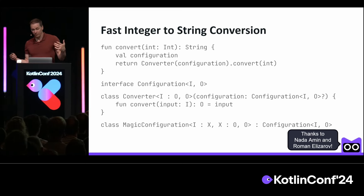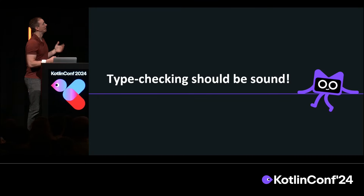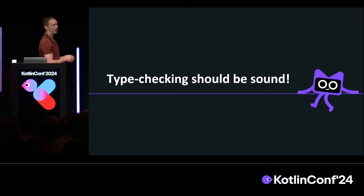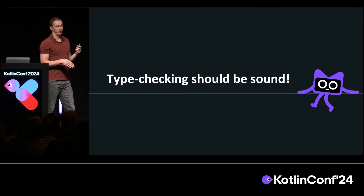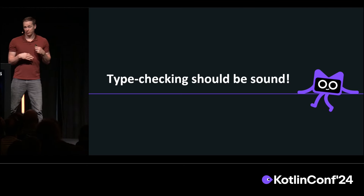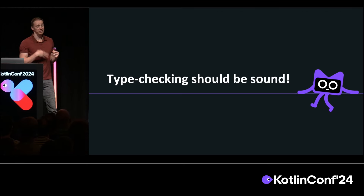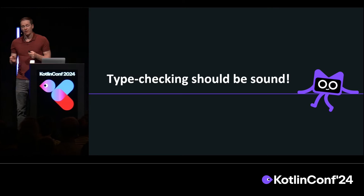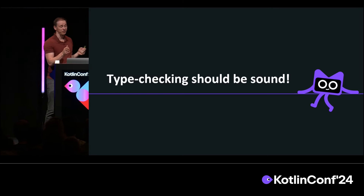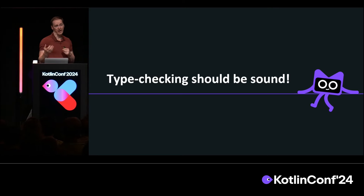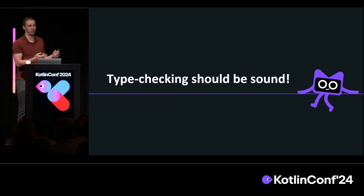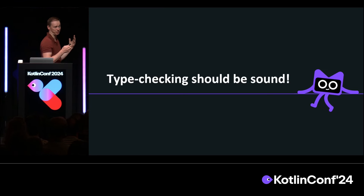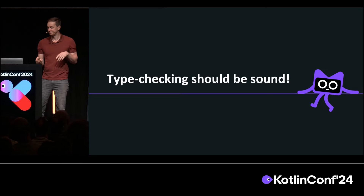Part of revamping is making sure that type checking is sound, meaning any program we accept indeed ensures the guarantees that we expect the type system to provide. Of course, we'll still have back doors like casts, but those are explicit and intentional. We don't want these unintentional ones that the type checker doesn't even know what to insert a runtime check for.